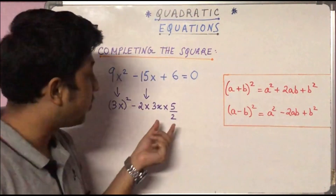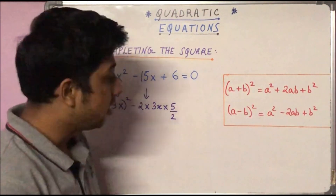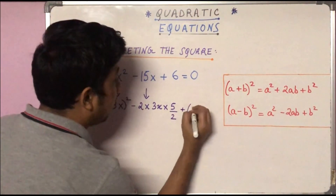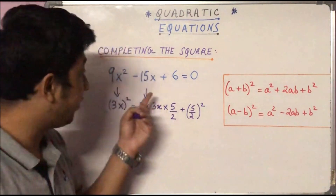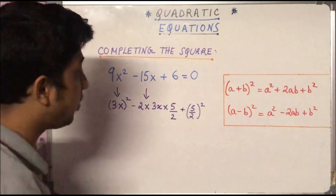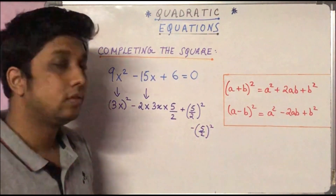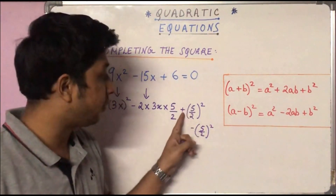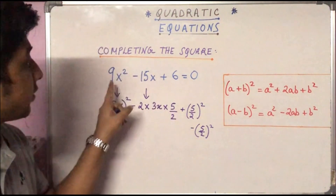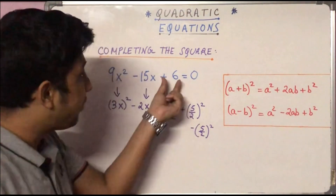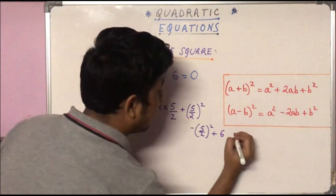Now that b = 5/2, to complete the expression as a perfect square — a² - 2ab + b² — we also need b² = (5/2)². Since (5/2)² is not already present in the expression, we add (5/2)² and also subtract (5/2)² to keep the equation balanced, so the expression equals 0.